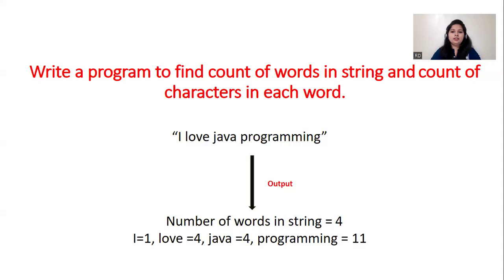Let's consider this is our input string: 'I love Java programming.' In this program we have to find out the number of words in this string. The number of words in this string is 4, and next we have to find the number of characters in each word. The output should be: I equal to 1, Love equal to 4, Java equal to 4, programming equal to 11.